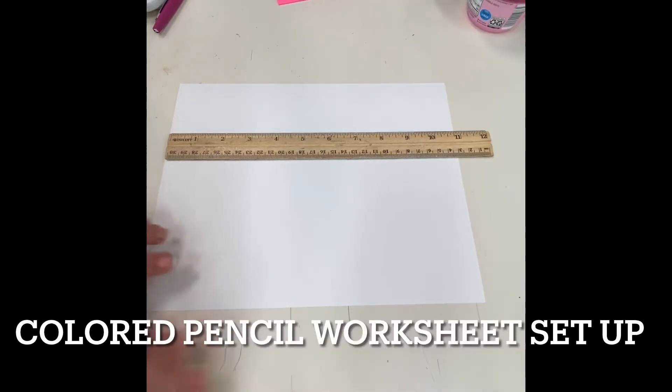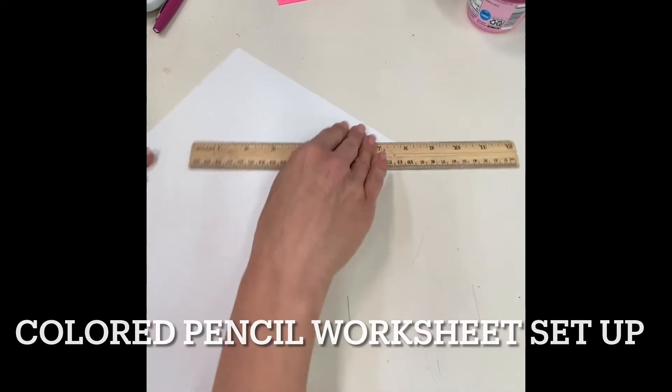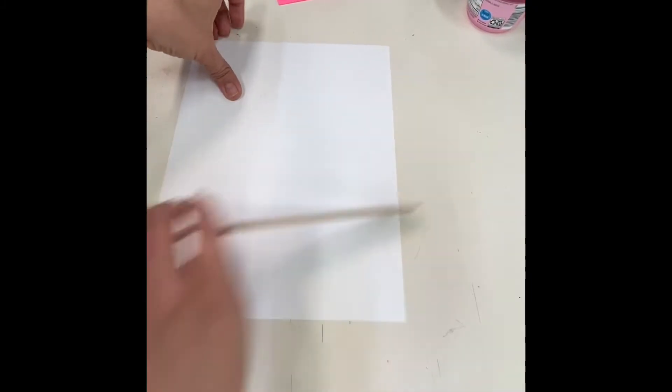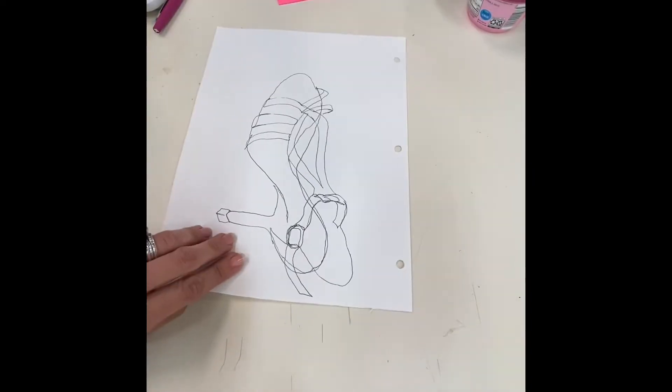Today we are going to set up a worksheet for practicing colored pencils. You want to try and find a piece of drawing paper and not computer paper, even if it's a piece of paper that you drew something on previously or it has holes in it. That is perfectly fine for a worksheet, just use the back side.